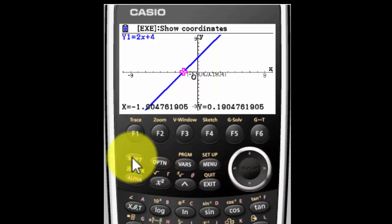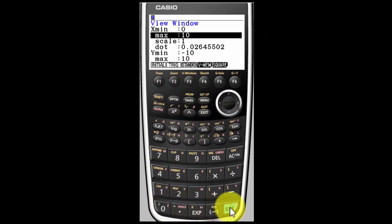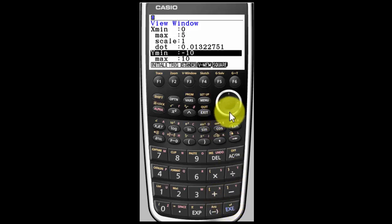Let's say I want to change the view window again. Shift view window. Only now I want to go from 0 to 5 on the x-scale. And on the y-scale I also want to go from 0 to 5.